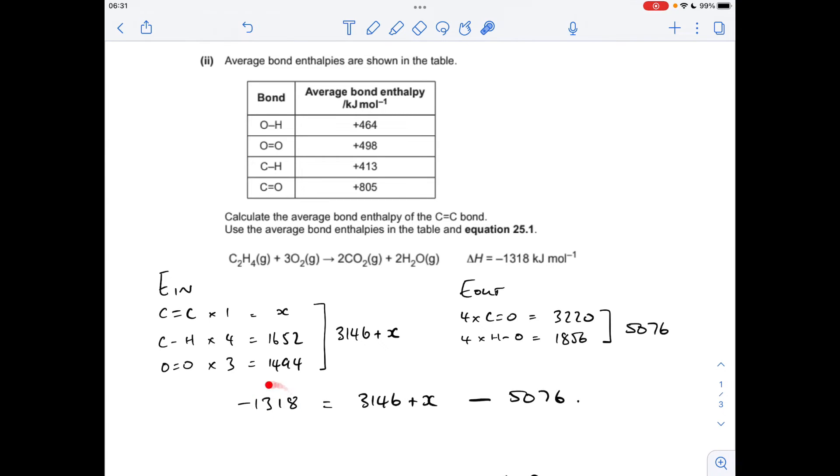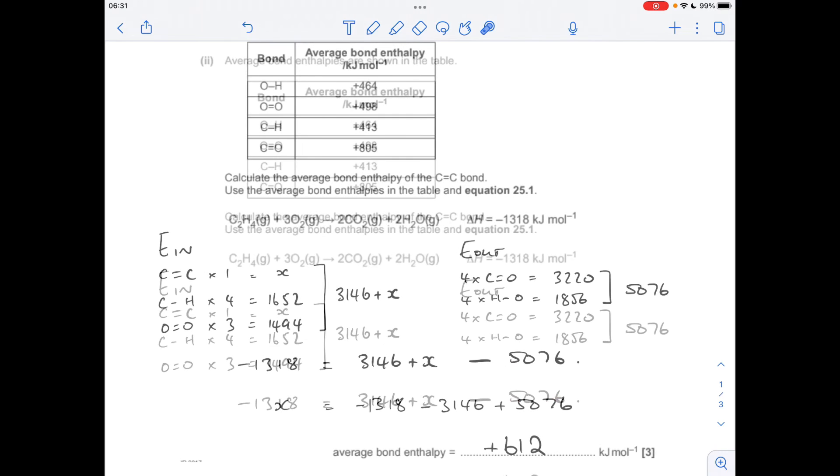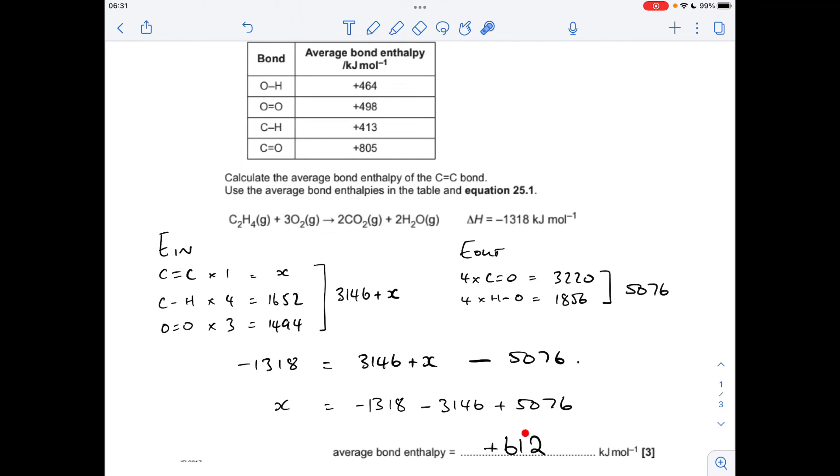So delta H equals the in minus the out. Rearrange for X, and we get plus 612 kilojoules per mole for the C=C double bond.